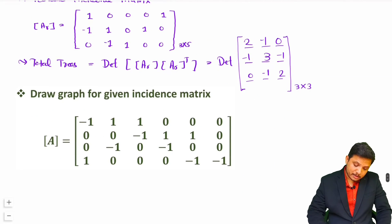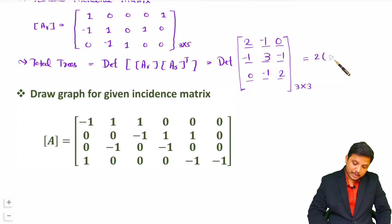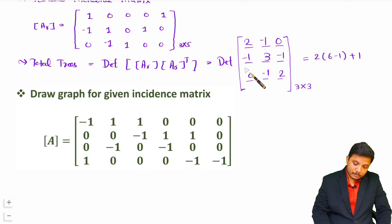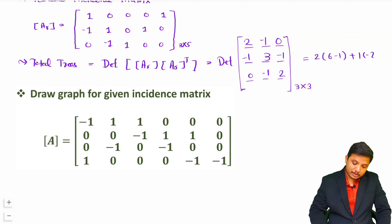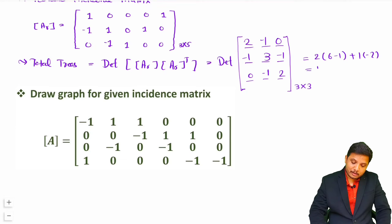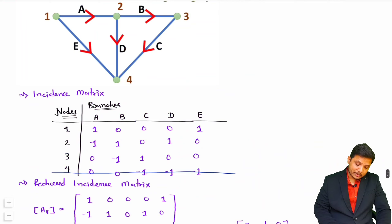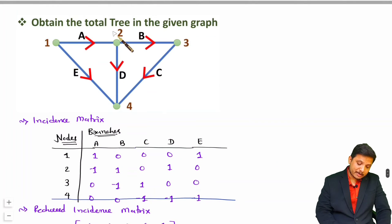Now we need to find the determinant of this 3×3 matrix. Expanding: 2 times (3×2 minus (minus1)×(minus1)) minus (minus1) times ((minus1)×2 minus 0) gives us 2 times 5 minus (minus 2), which equals 10 minus 2 = 8. So for this given question, the total number of trees is 8.